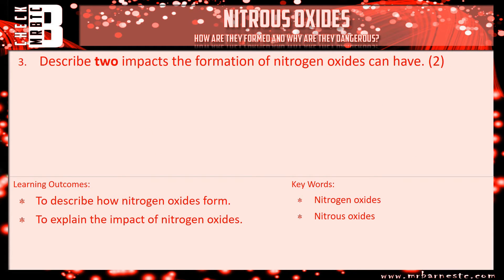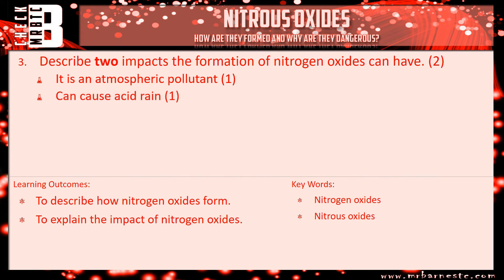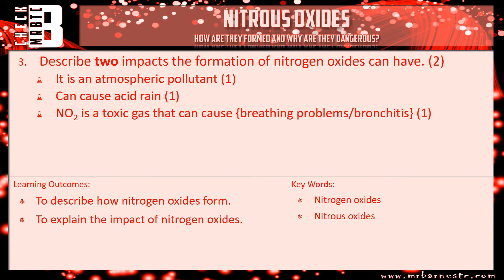Question three, describe two impacts the formation of nitrogen oxides can have. Number one, it's an atmospheric pollutant. Number two, it can cause acid rain. And number three, NO2 is a toxic gas that can cause breathing problems or bronchitis.